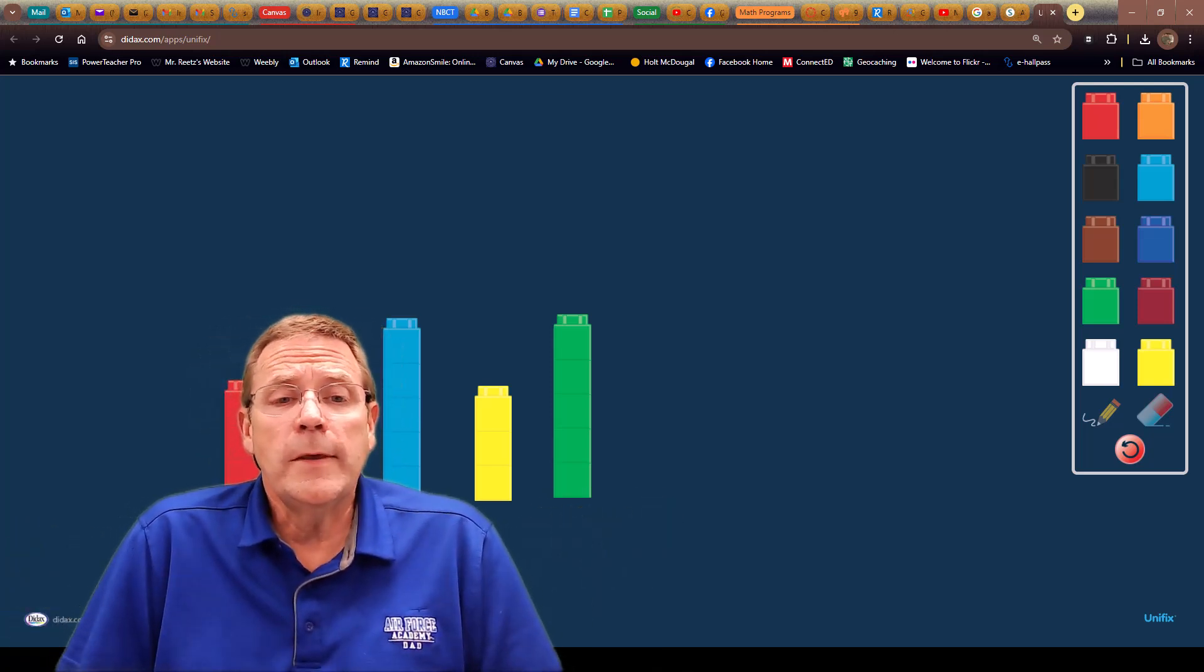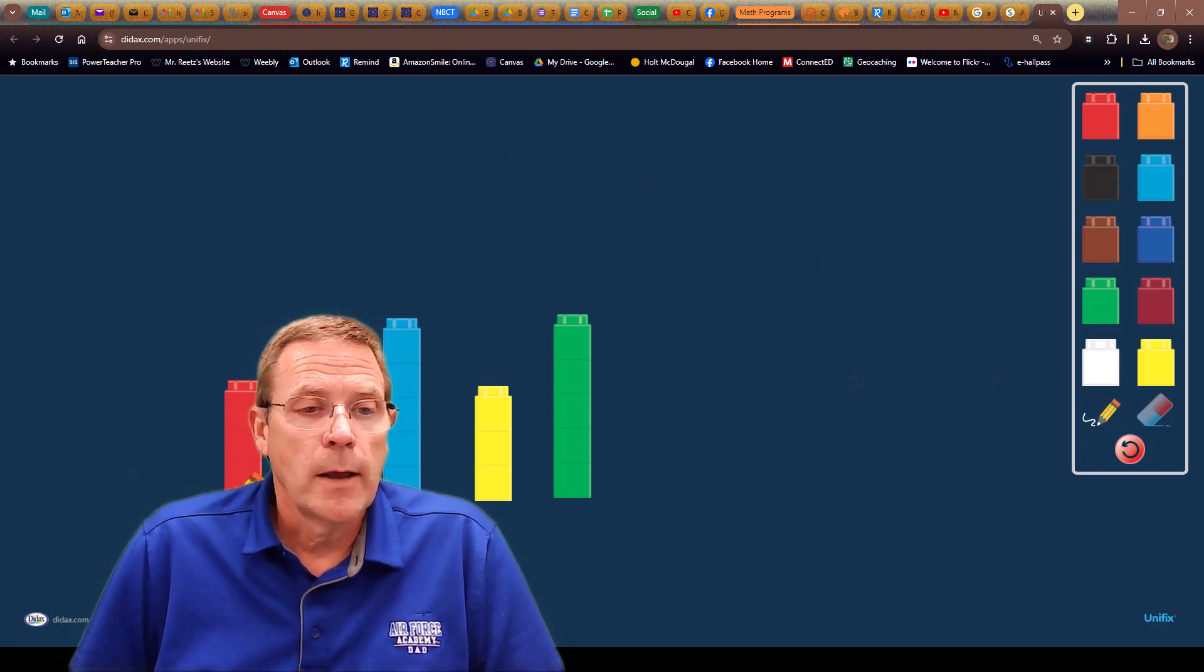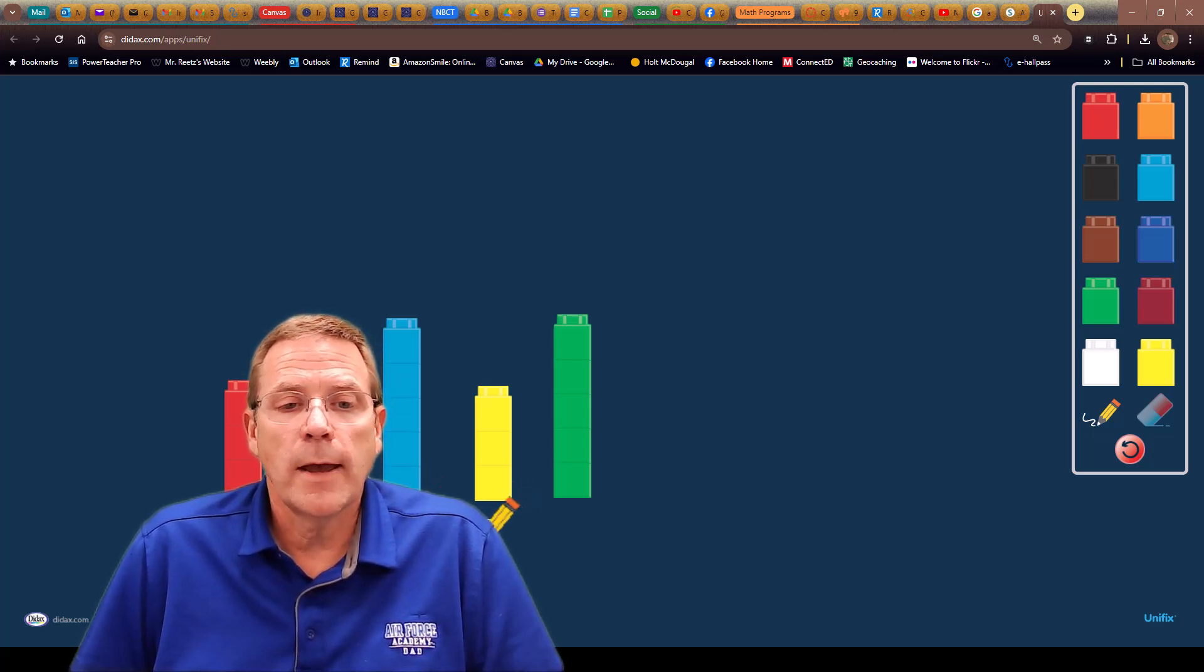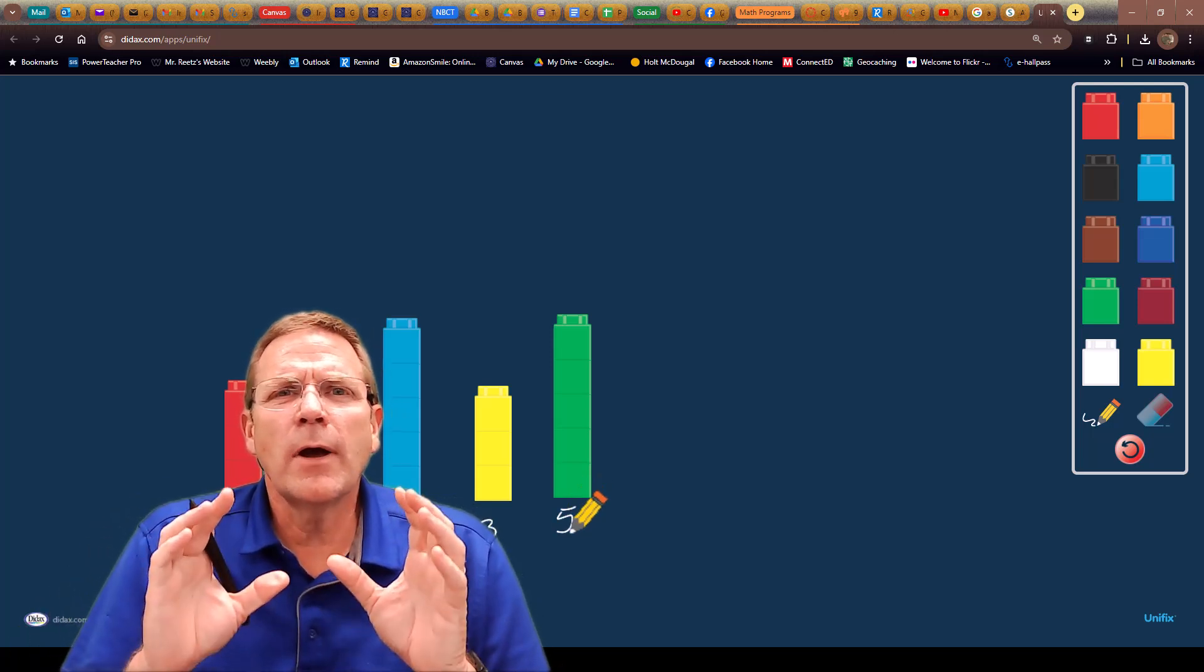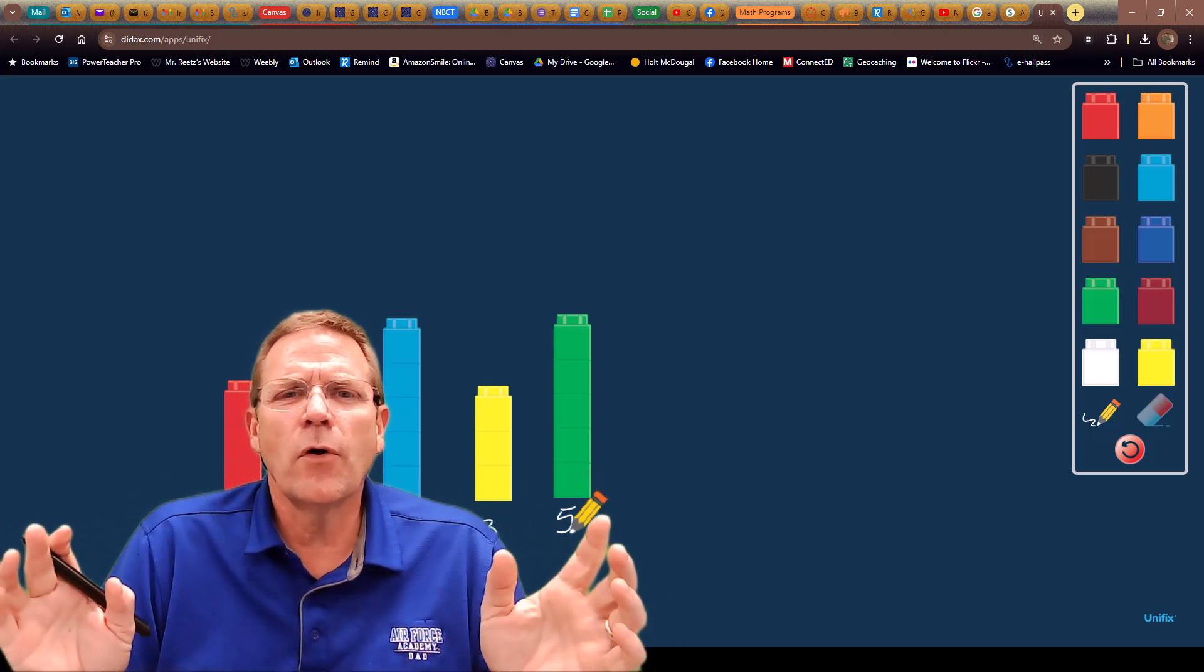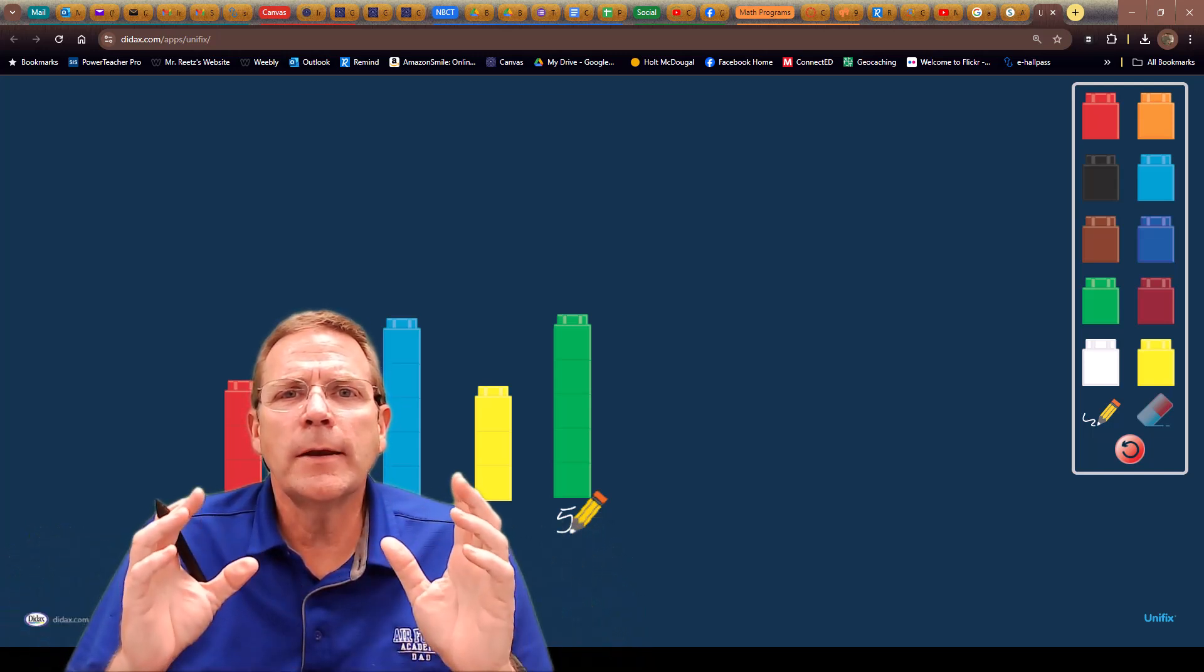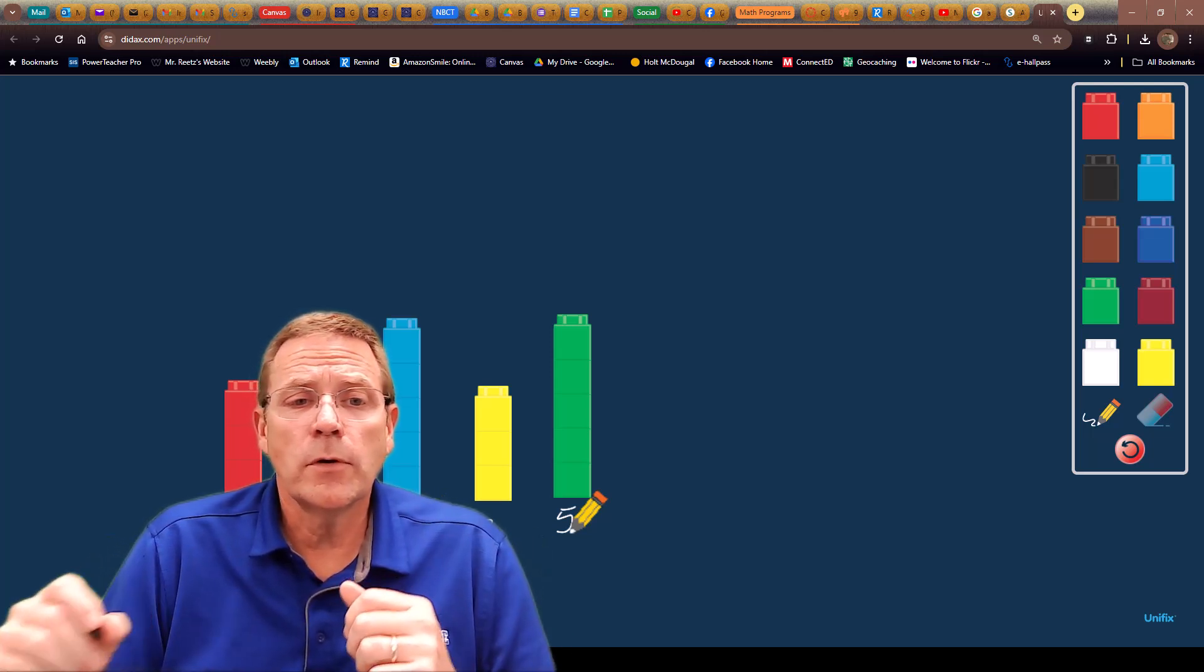What we're going to do with these unifix cubes, you can see we've got set up to where we got a three, we have a four, we have a five, we have a three, and we have another five. And we need to figure out what the average of all those are. And to do that, we're going to take and divide them up into five equal sections, which is really simple to do.